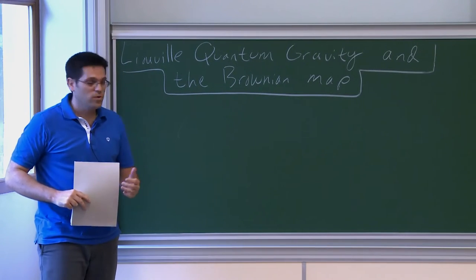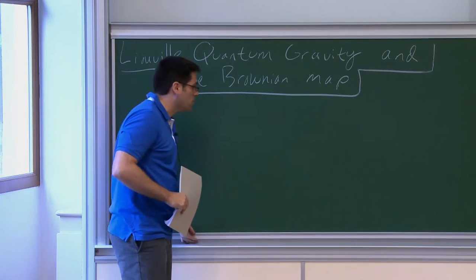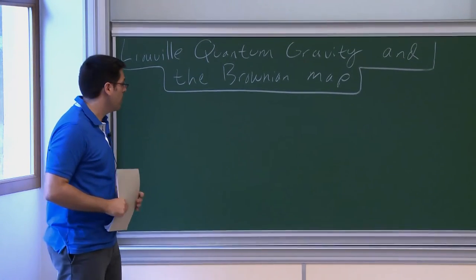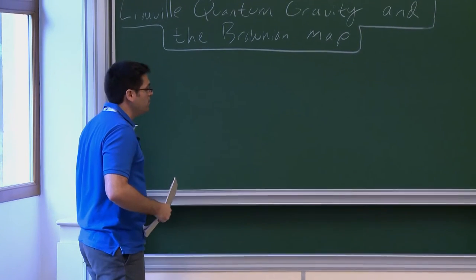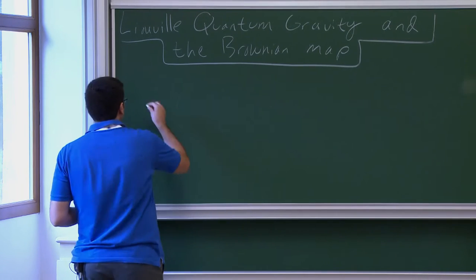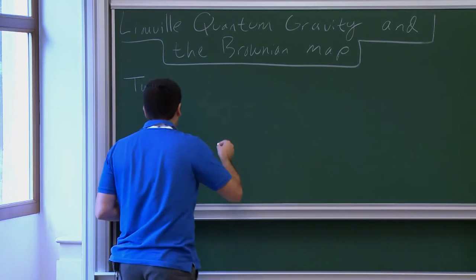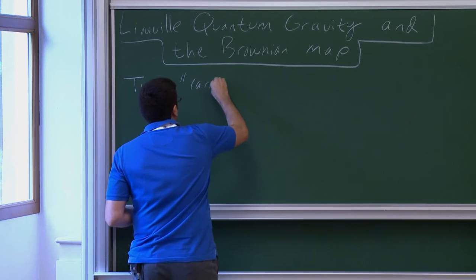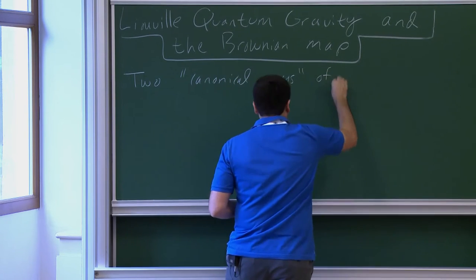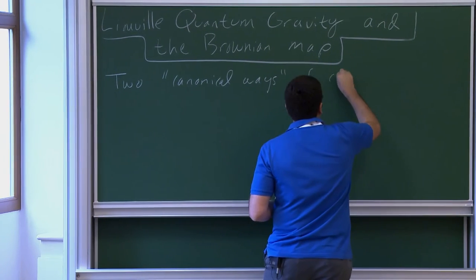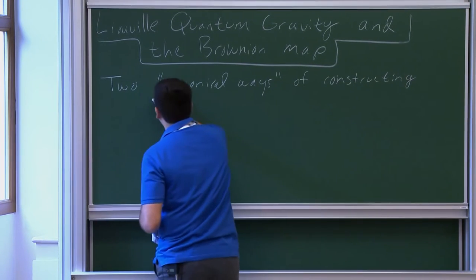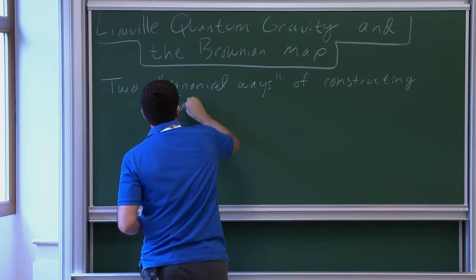First of all, let me begin by thanking Hugo for the opportunity to give this course here at IHS, and also thanks to everybody for coming. Let me begin by giving you an introduction to what this is going to be about. There are two canonical ways of constructing surfaces uniformly at random which are homeomorphic to the sphere.